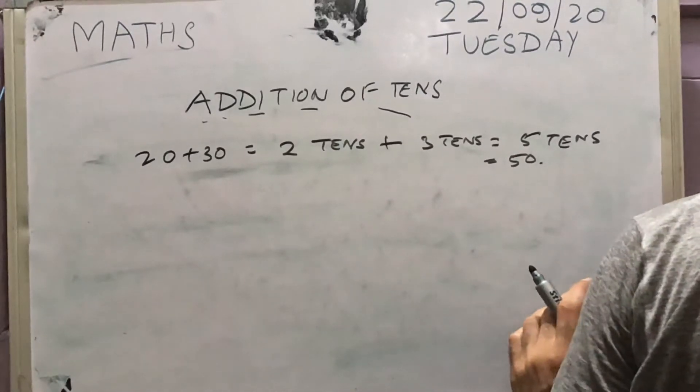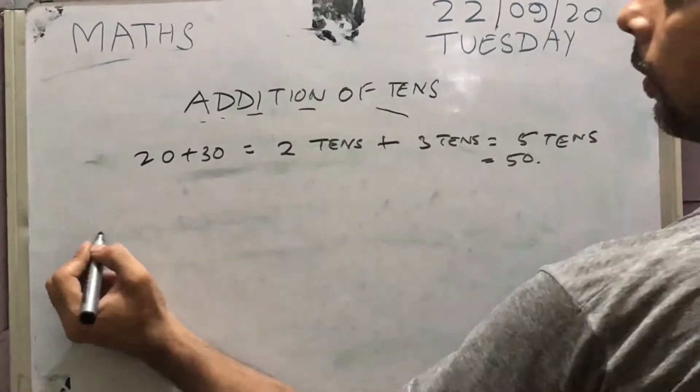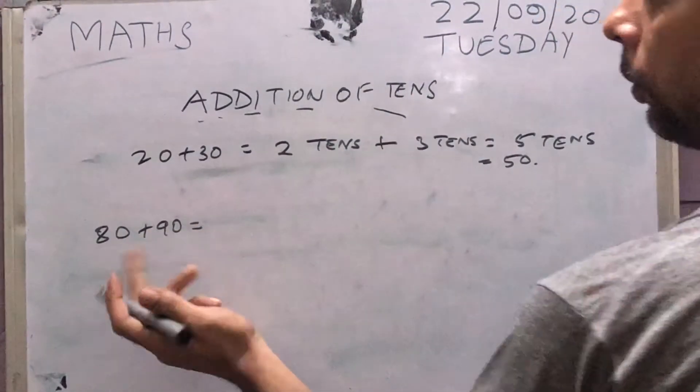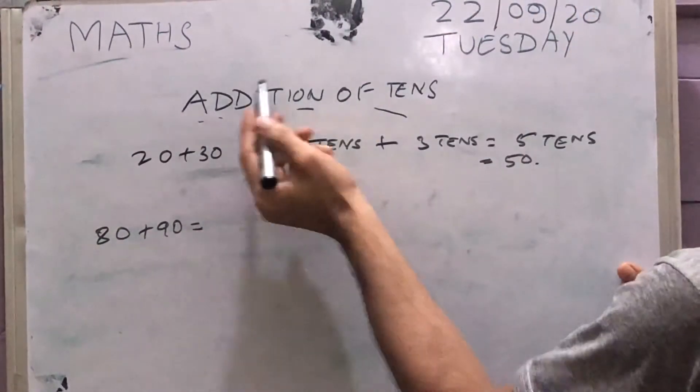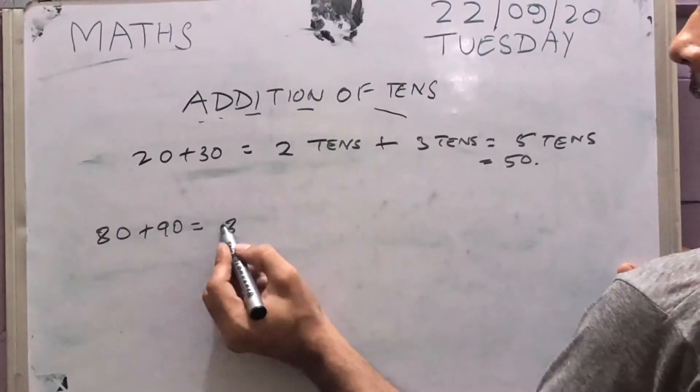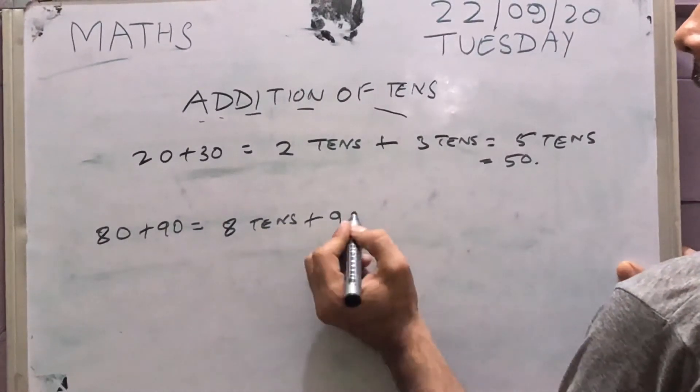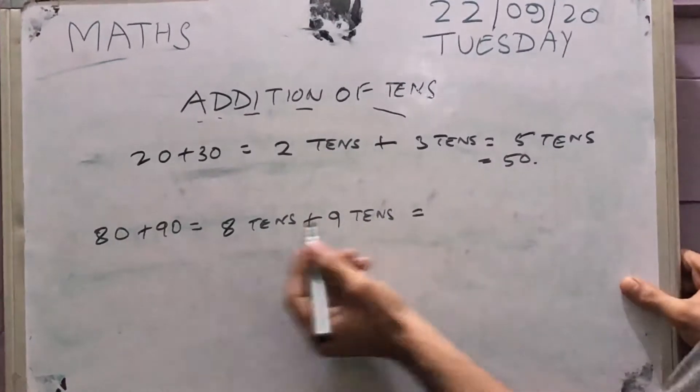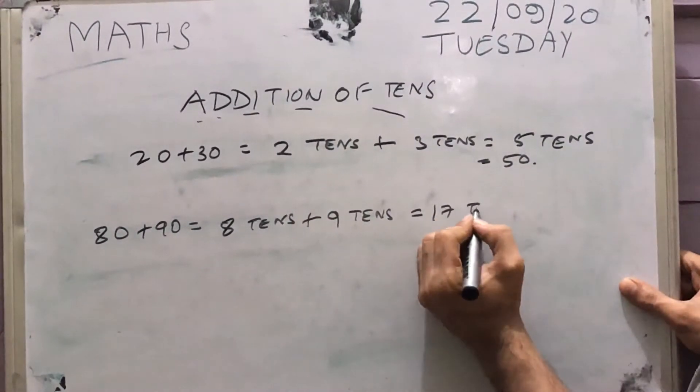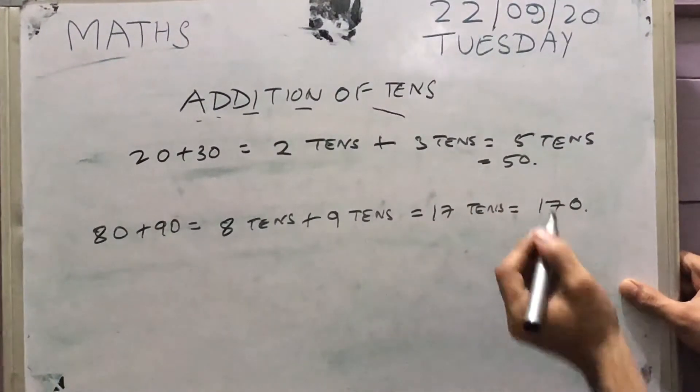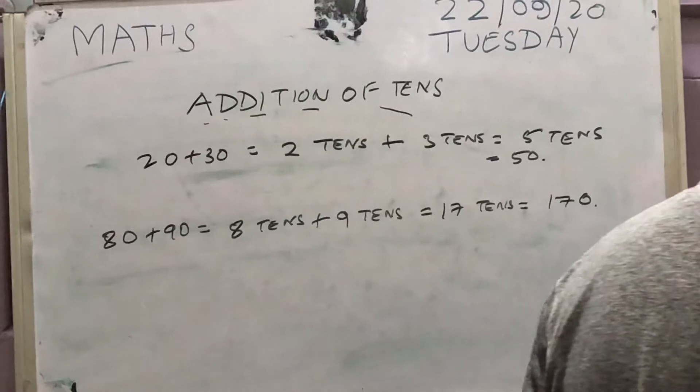For example, another one, 80 plus 90. You can do straight addition or using addition of tens. This is 8 tens, 90 is 9 tens, which is 9 plus 8, 17 tens, which is equal to 170. So in this way it becomes easy for you.